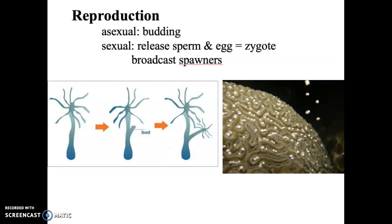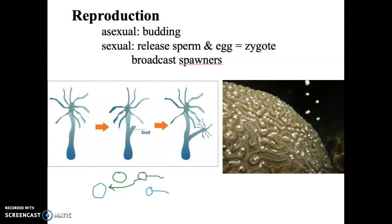I want you guys to think about this factor. If you're releasing eggs and sperm when you're coral, and at the same time — or a lot of times around the same time of the month because of the lunar cycle — the sponges are also releasing eggs and sperm, how do you prevent the sponge sperm from fertilizing the coral egg? What prevents fertilization from happening between two different species when it's all simply floating around in the water?